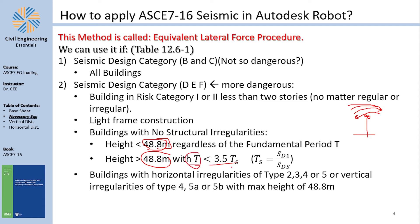Also, if you have horizontal irregularities of type 2, 3, 4, or 5, or vertical irregularities of type 4, 5a, or 5b, then the Equivalent Lateral Force Procedure is limited to structures of 48.8 meters or less. For more details on when other methods must be used, check table 12.6-1.